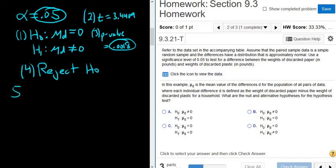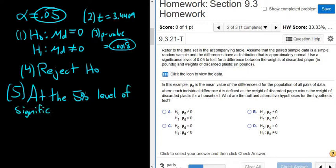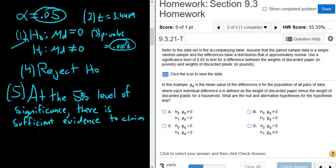And then step five, we write our interpretation out. So we start by mentioning the level of significance. So at the 5% level of significance. And whenever you reject H0, there is sufficient evidence. So there is sufficient evidence to claim that.